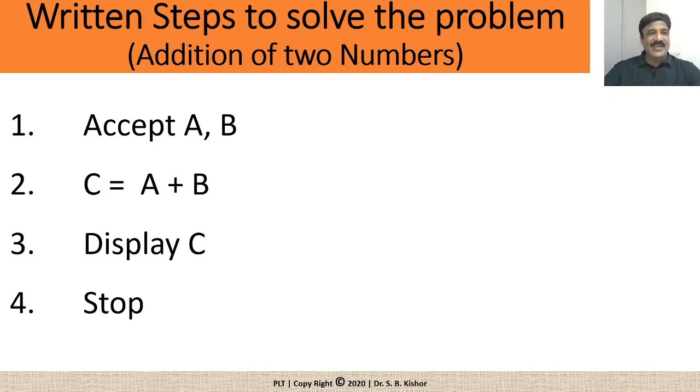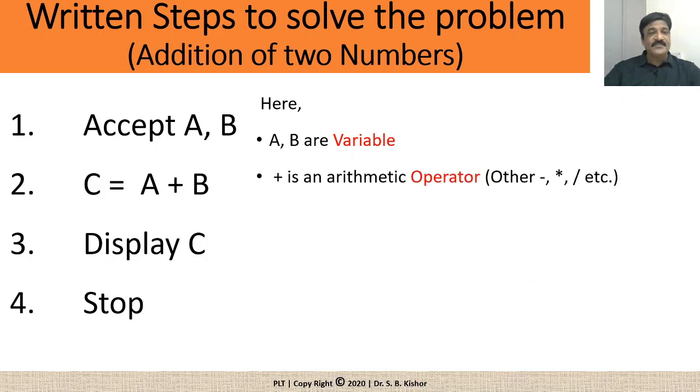It means we may call these are certain instructions in order to find out the addition of two numbers. So, now question arises what is A and B, what is plus, what is equal and so on. So, here A and B are what? They are called variables. Now, why they are variable? Because their value may change. Someone may give 2 or 5 the value of A, the value of B may be 7 or 8 or something like that. It means the value may change, the value may vary and hence it is referred as a variable.